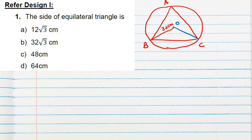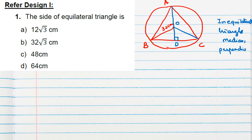We join OC and draw a perpendicular from A to BC, meeting BC at D. Now, in an equilateral triangle, this is a very important point: the median, the perpendicular bisector, and the angle bisector are all the same line. So AD, drawn as a perpendicular, will also act as the median and angle bisector. It will bisect angle A as well as angle O, so these two angles will be equal.